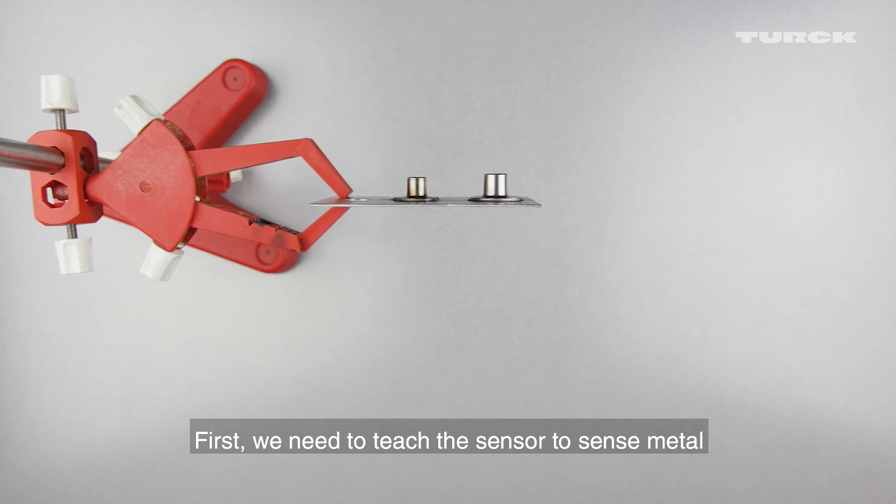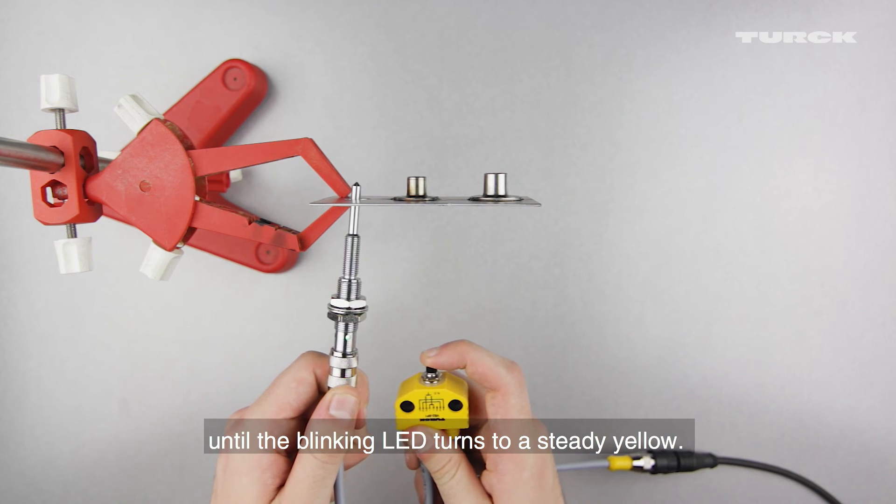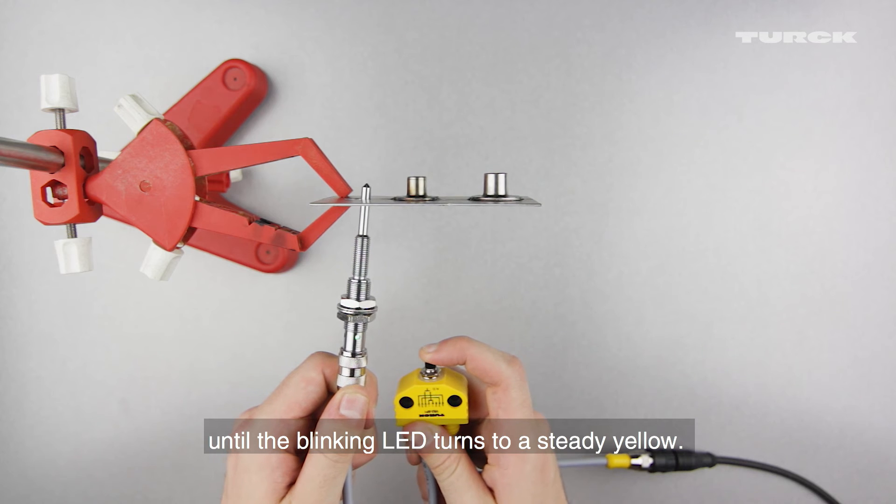First we need to teach the sensor to sense metal without the nut in place. To do this, insert the sensor through the mounting hole. Press the button of the teach adapter until the blinking LED turns to a steady yellow.